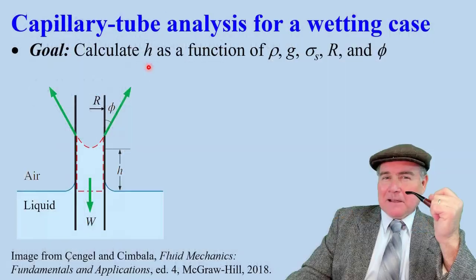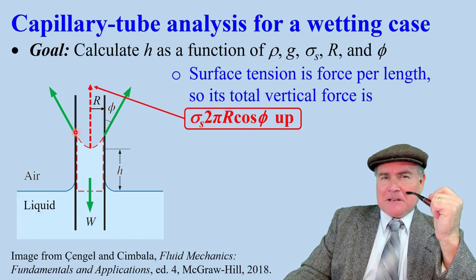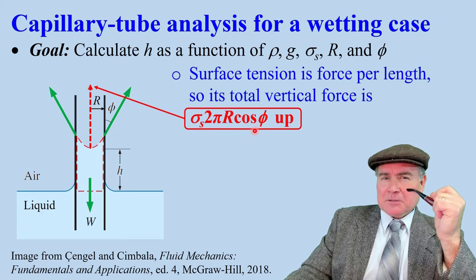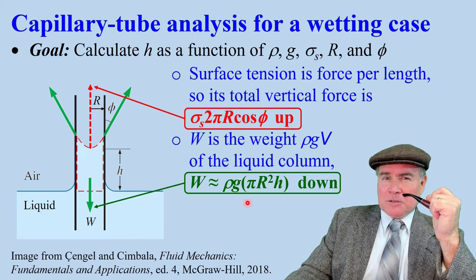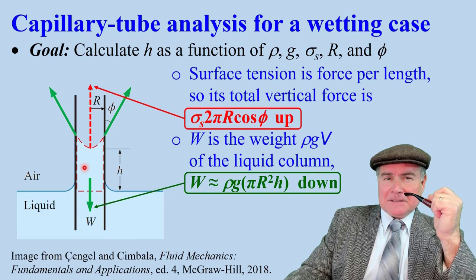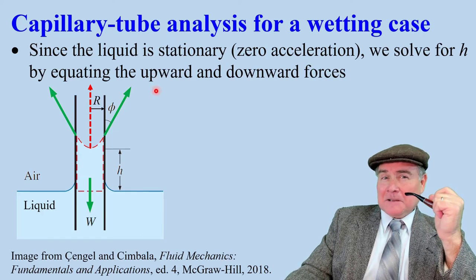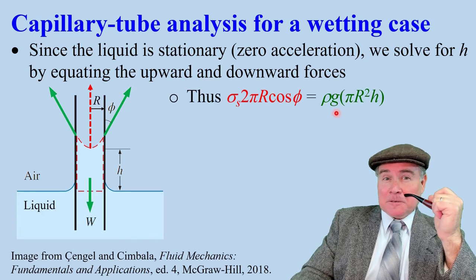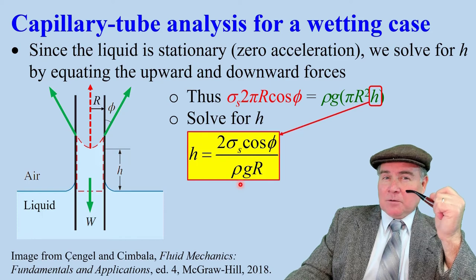Now we calculate the height as a function of the other variables. Surface tension acts circumferentially, so the total surface tension upward is sigma s times the circumference times cosine phi. W is the weight of the fluid. If we ignore the meniscus, W is rho g times the volume of the liquid inside here. That acts down. Since the liquid is stationary, Newton's law tells us that we can sum up the forces and set them to 0. Upward force must equal the downward force. Now we solve for H. H is 2 sigma s cosine phi over rho g r.